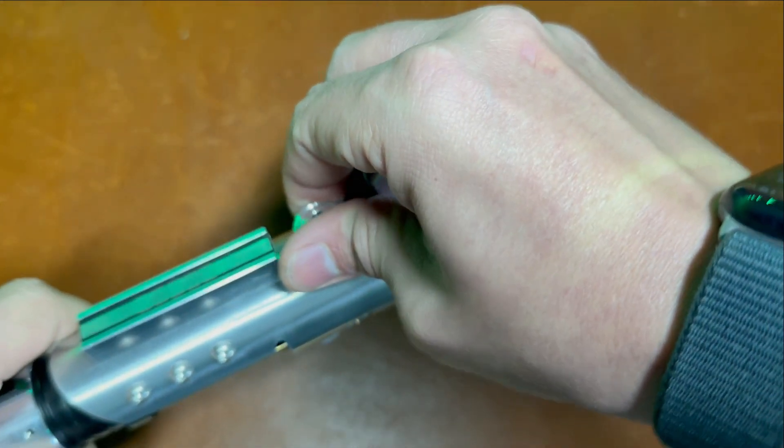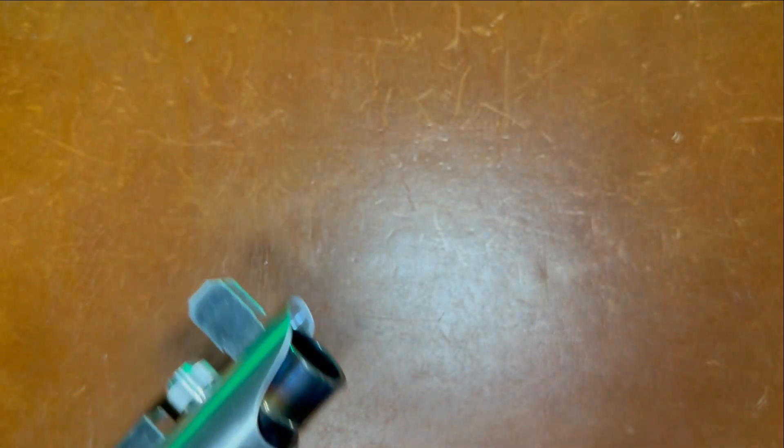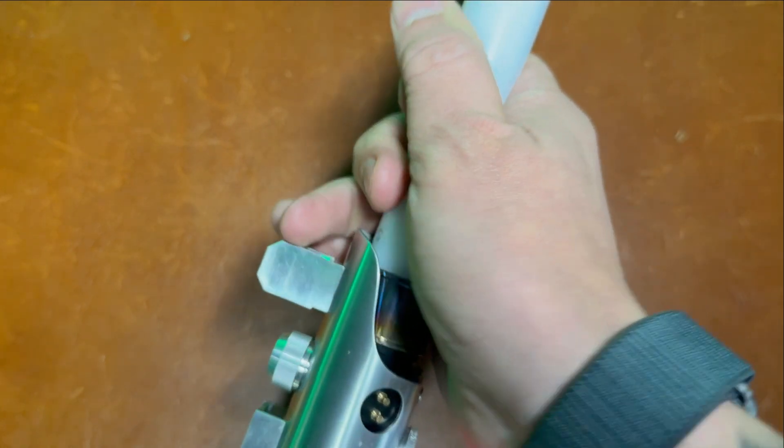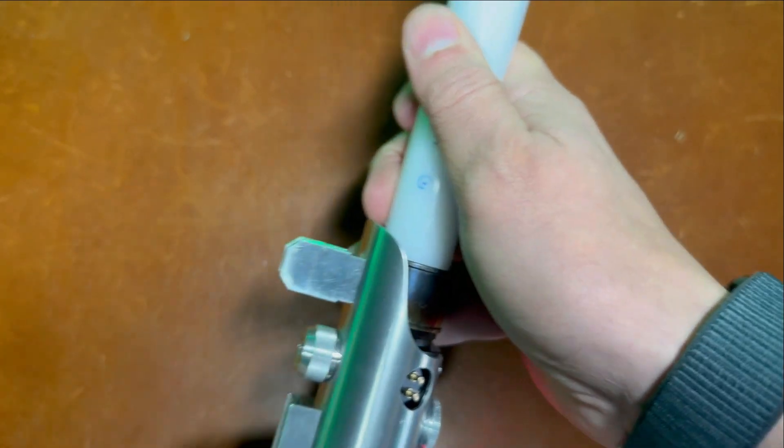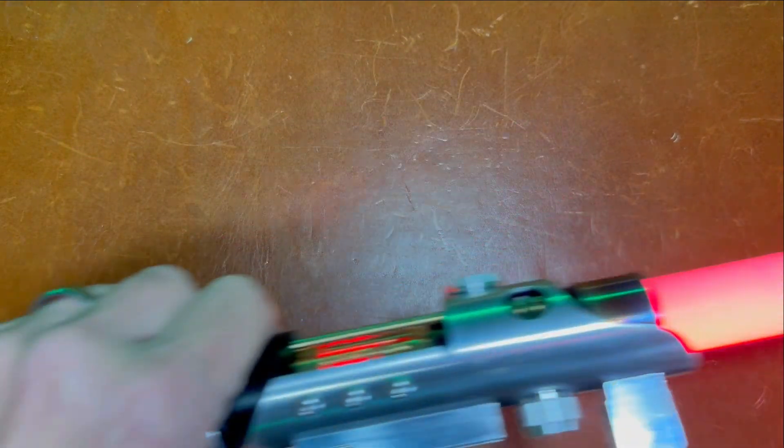We're going to loosen this up right here. You don't have to take it all the way out, just get it out of the blade socket. This saber is designed for a one inch diameter blade. So we'll put the blade in, lock it down, and hit power. And it lights up the blade very well.